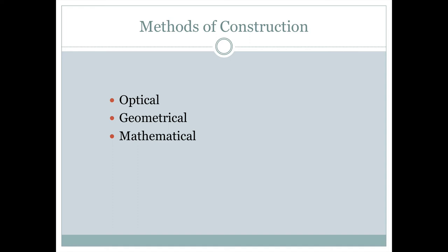So, if you want to construct a map projection, how can you do it? There's three basic ways: the optical way, the geometrical way, and the mathematical way.